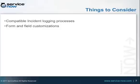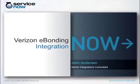Also consider your form and field customizations. If your drop-downs don't have out-of-the-box values, you'll likely need to tweak some business rules or script include transform maps to match your drop-down values — such as incident state and other drop-downs. That's one thing to consider when scoping out this project. Thank you for attending this demo of the Verizon eBonding integration with ServiceNow.